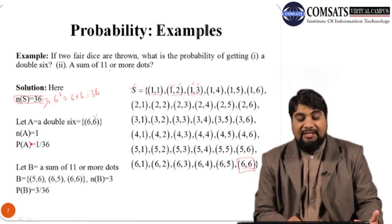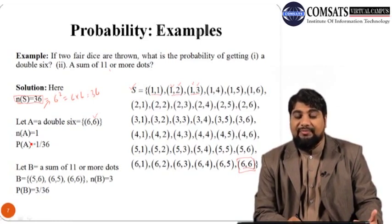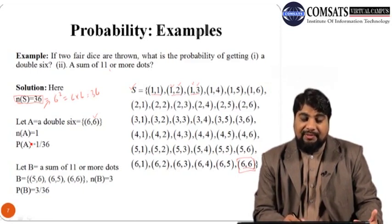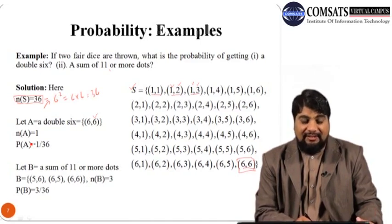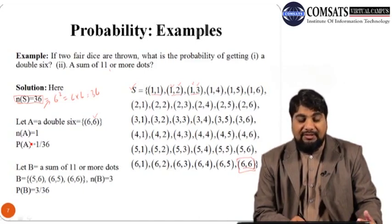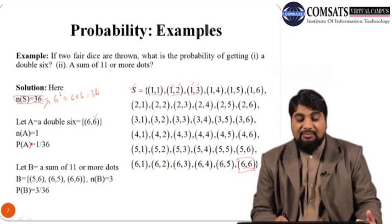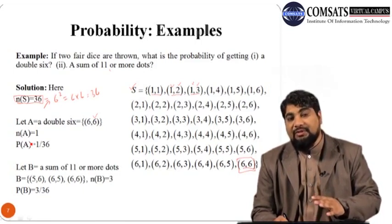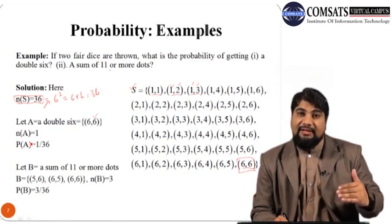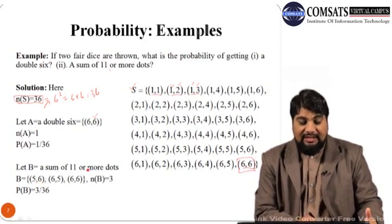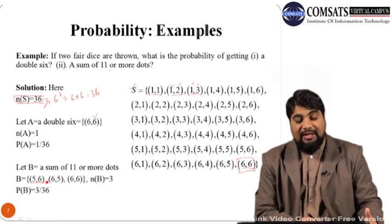The second part asks for the probability of getting a sum of 11 or more dots when two dice are thrown. Going through the sample space, most outcomes have sums less than 11. The three outcomes satisfying sum ≥ 11 are (5,6) = 11, (6,5) = 11, and (6,6) = 12.